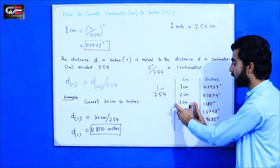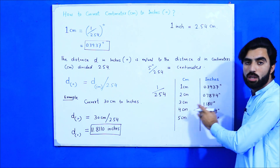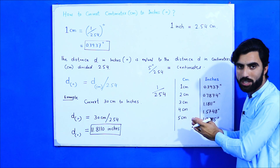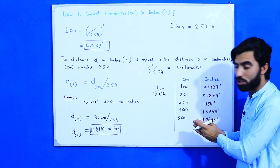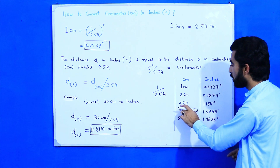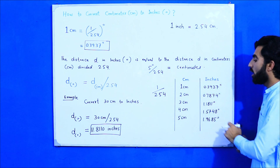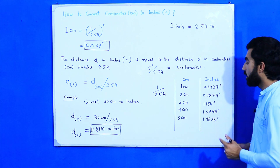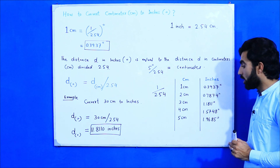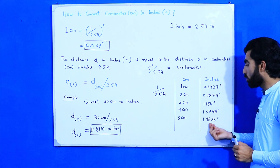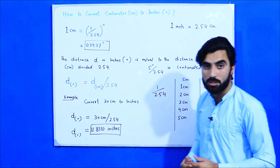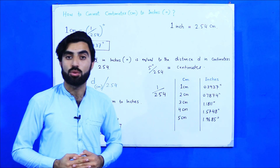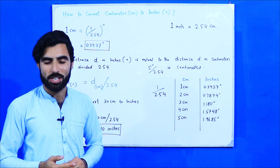Three centimeters equals 1.1811 inches, four centimeters equals 1.5748 inches, and five centimeters equals 1.9685 inches. This is the method by which you can convert from centimeters to inches.